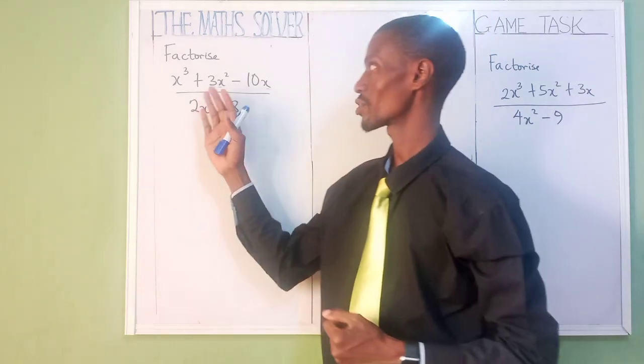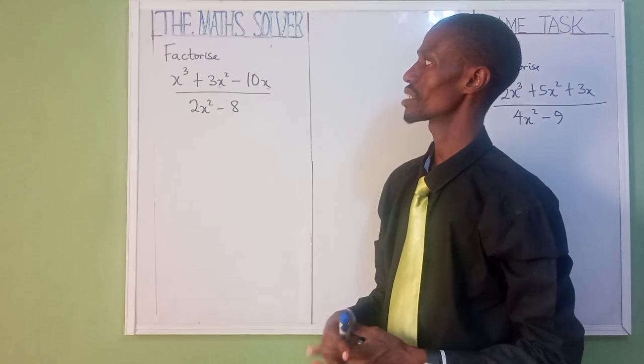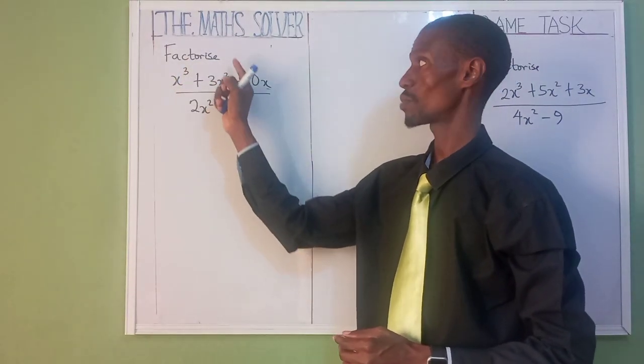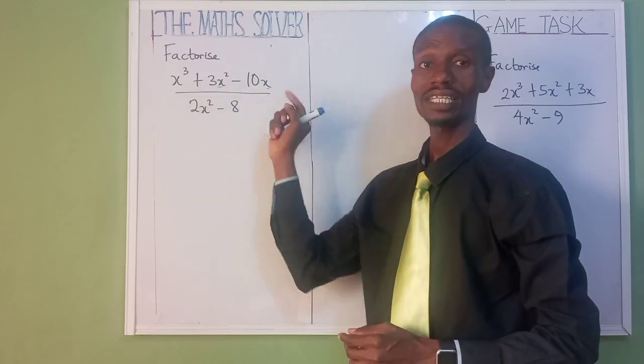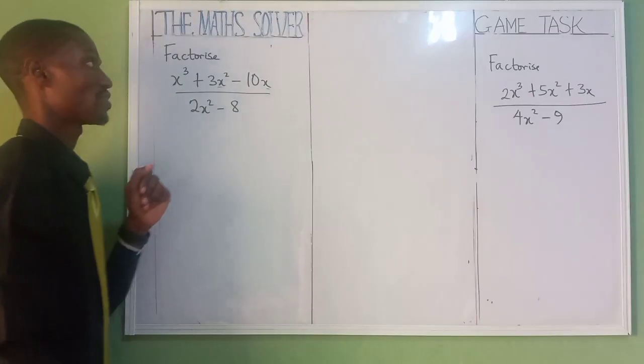Today, we are moving on to factorization. How do you factorize a question like this? x³ + 3x² - 10x divided by 2x² - 8. How do we solve it? Very simple.